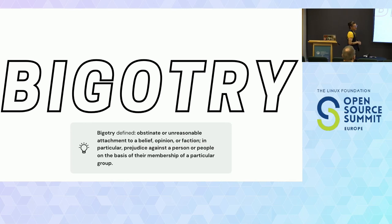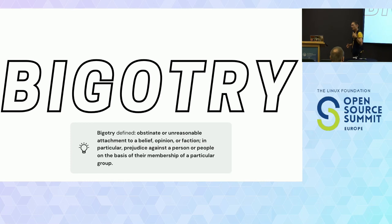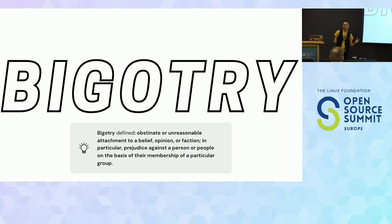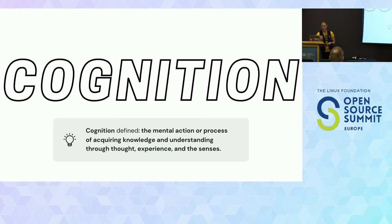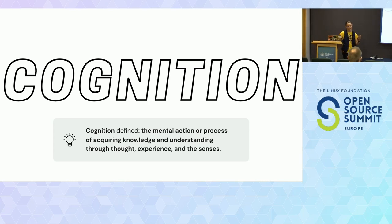I'd like to talk about what I'm not talking about today: bigotry. We can't solve it — it's a pretty natural part of the way human cognition exists. There's positive and negative bias all over the place; we're not going to be able to remove that from the human brain. But we can contextualize the human brain in an environment which makes their decision making easier. I'm going to be talking a lot about cognition today — the way that the human brain takes mental actions or processes to acquire knowledge and understanding through thought, experience, and the senses.